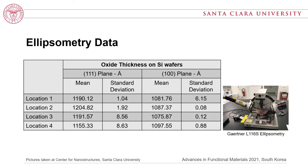The ellipsometry data was gathered using a Gaertner ellipsometer L116CS, as shown on the right side of the slide. For each sample, data was recorded at four locations, and at each location, 15 consistent readings of oxide thickness were captured, giving 60 data points total. For the 111 plane, thickness varied from 1155.33 Å to 1204.82 Å. For the 100 plane, thickness varied from 1075.87 Å to 1097.55 Å. This data suggests that growth is not uniform at the angstrom scale.